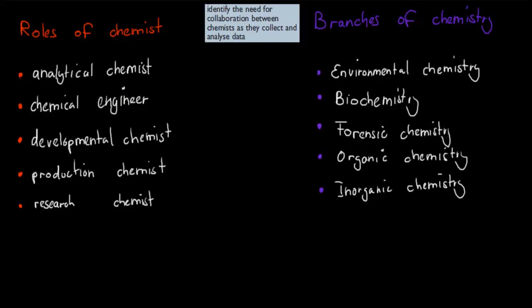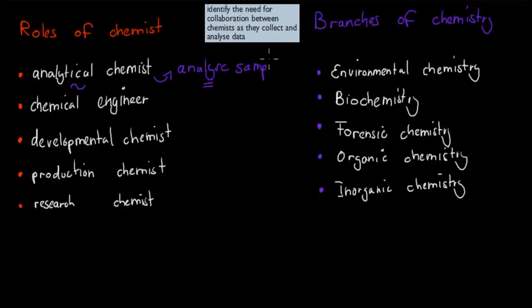As mentioned in the last video, there are different types of chemists, different roles of chemists, and different branches of chemistry. For example, we have the analytic chemist, who deals with analyzing samples — figuring out the composition of whatever sample they are looking at. We also have the chemical engineer, who designs new types of technology to be used by chemists.